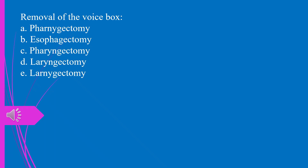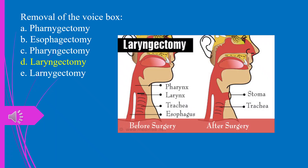Question 26. Removal of the voice box: a) laryngectomy (variant), b) esophagectomy, c) pharyngectomy, d) laryngectomy, e) laryngectomy (variant). The answer is d, laryngectomy. Pay attention to the spelling.